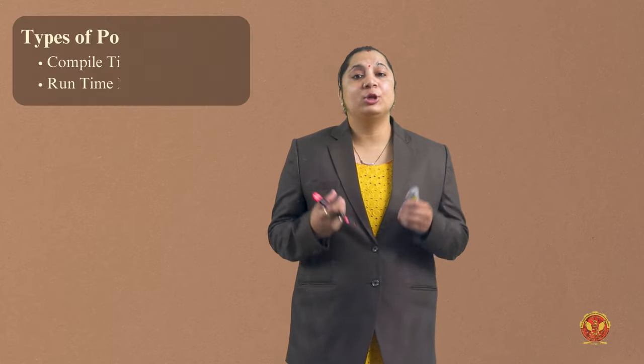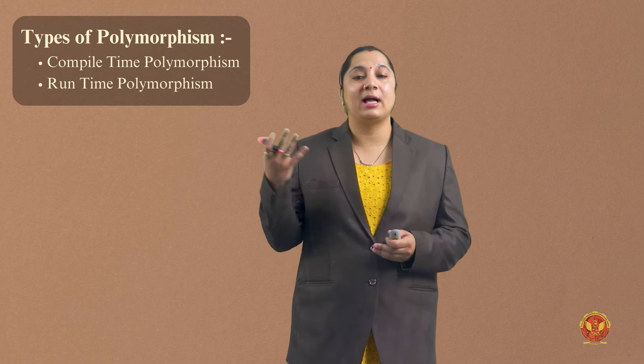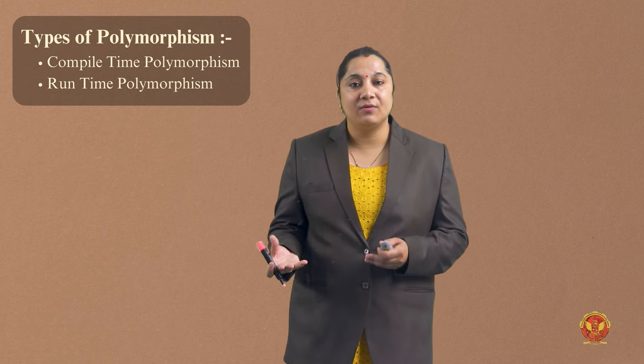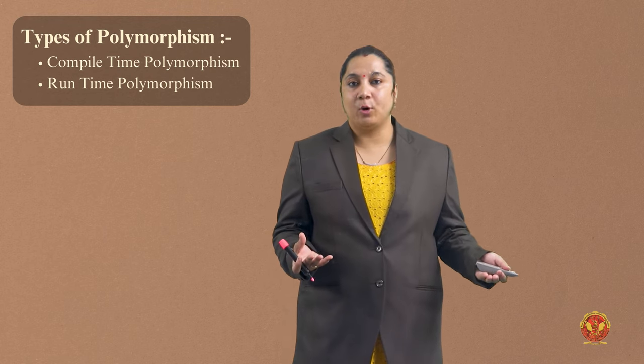Polymorphism is of two types. First is compile time polymorphism. Second is runtime polymorphism.